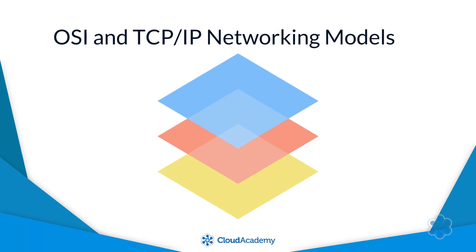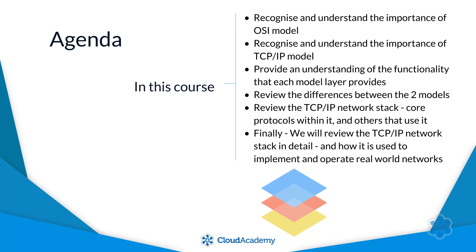In this course, we'll learn the layering specifics of each model and how both models differ from one another. The agenda for this course is as follows: we'll review the OSI model and detail each of its seven layers; we'll review the TCP IP model and detail each of its four layers; we'll provide an understanding of the upper and lower layer groupings within each model; and we'll review the differences between the two models.